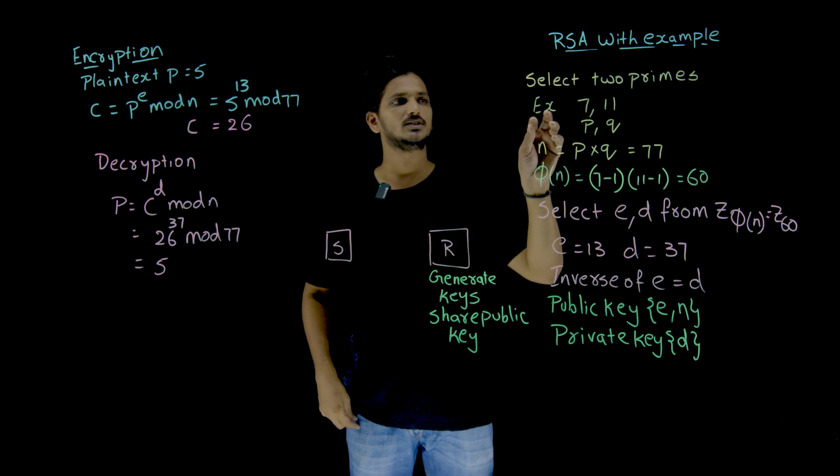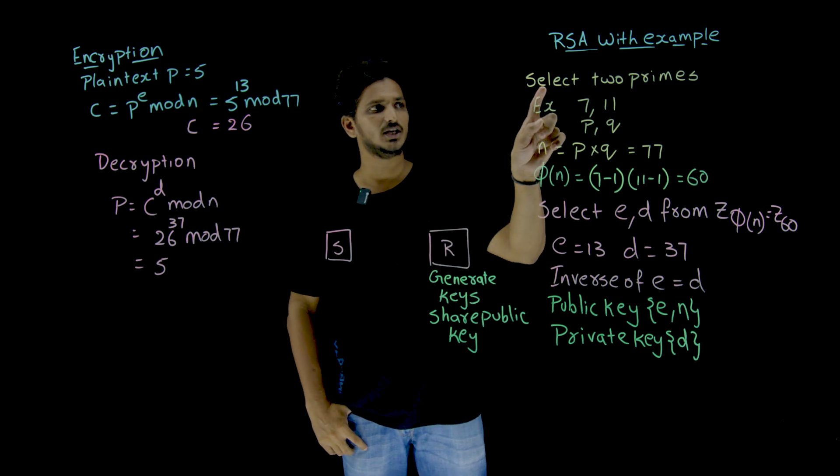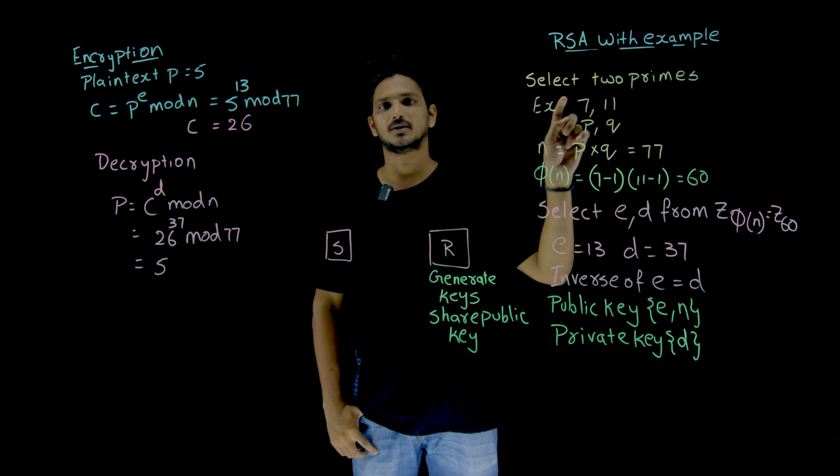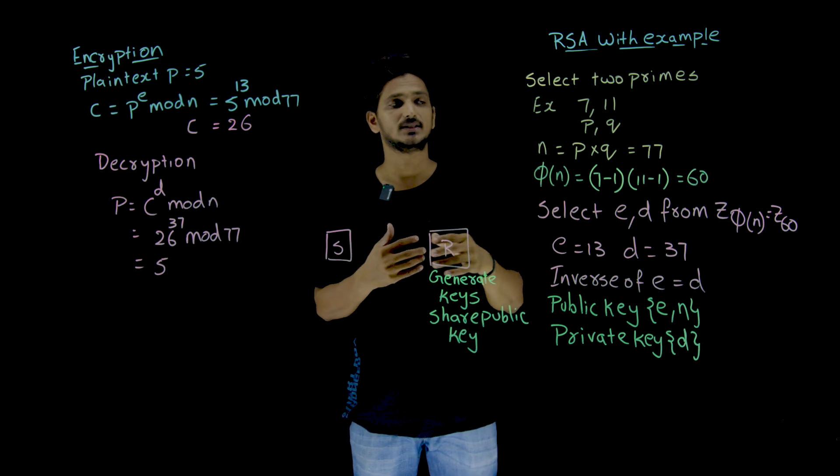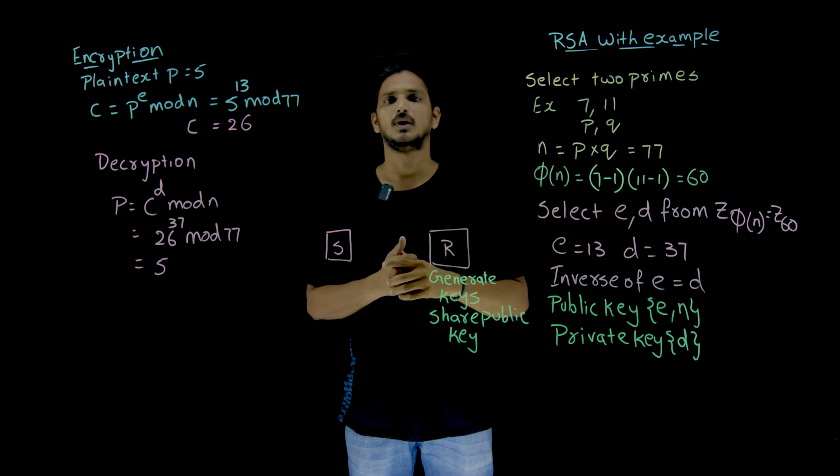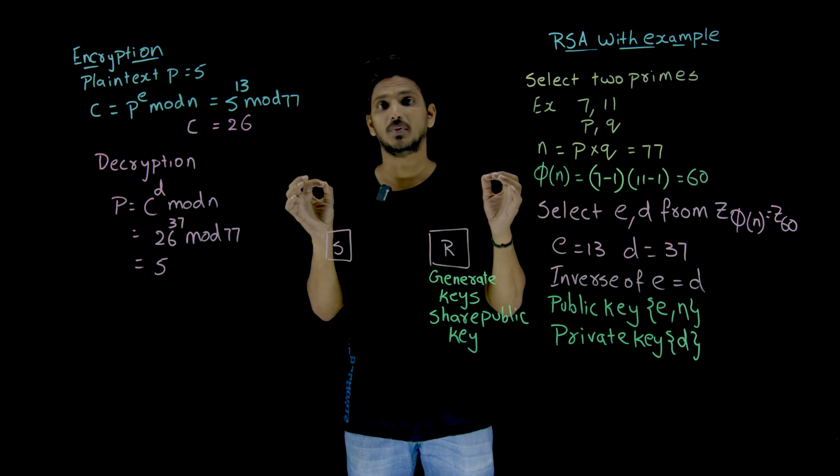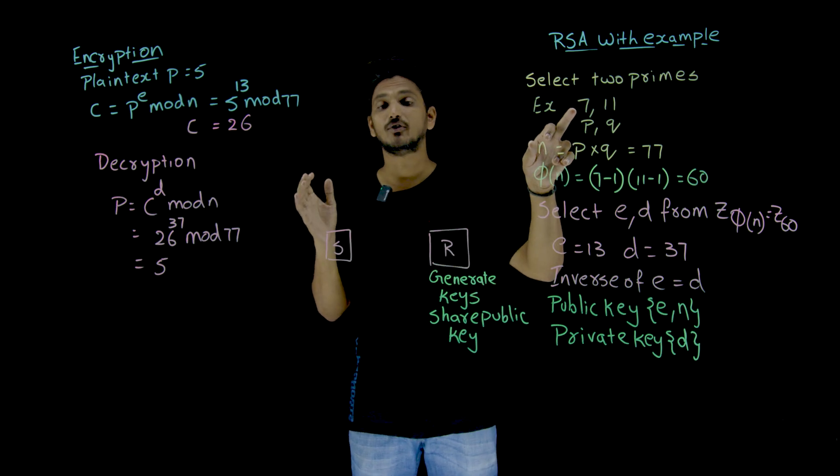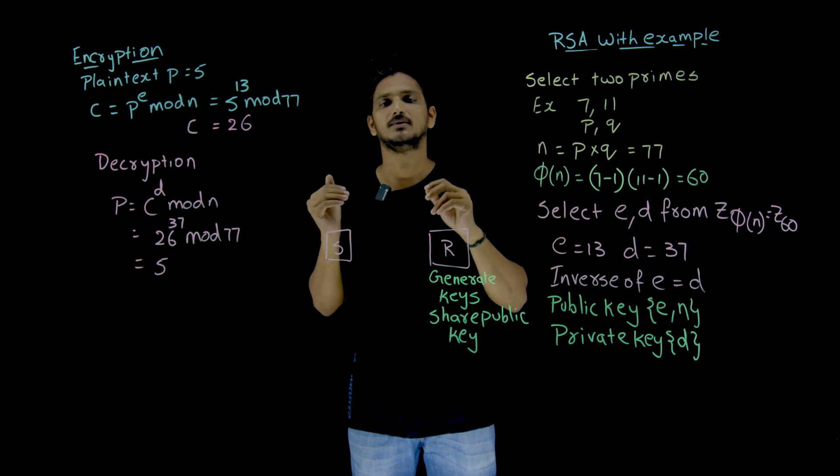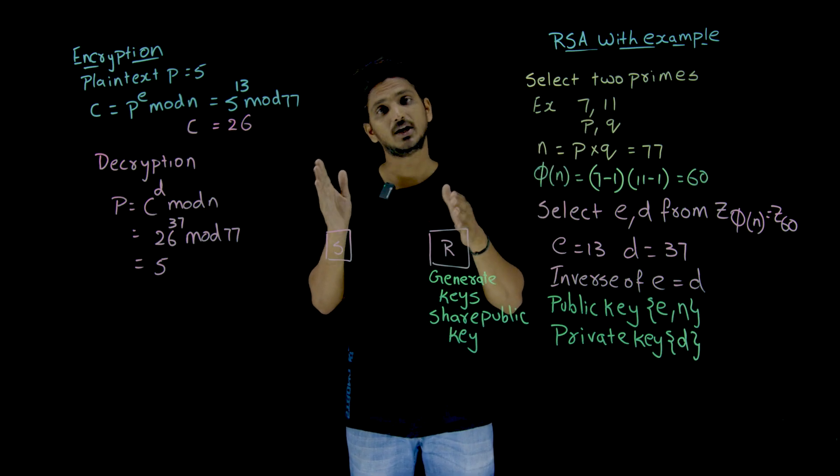Now let us try to understand what we are going to do. If the receiver wants to generate the key, first he has to select two prime numbers. Here in our example, we are selecting 7 and 11, which we call P and Q. But in reality, we are going to select large prime numbers that are having at least 512 bits each.